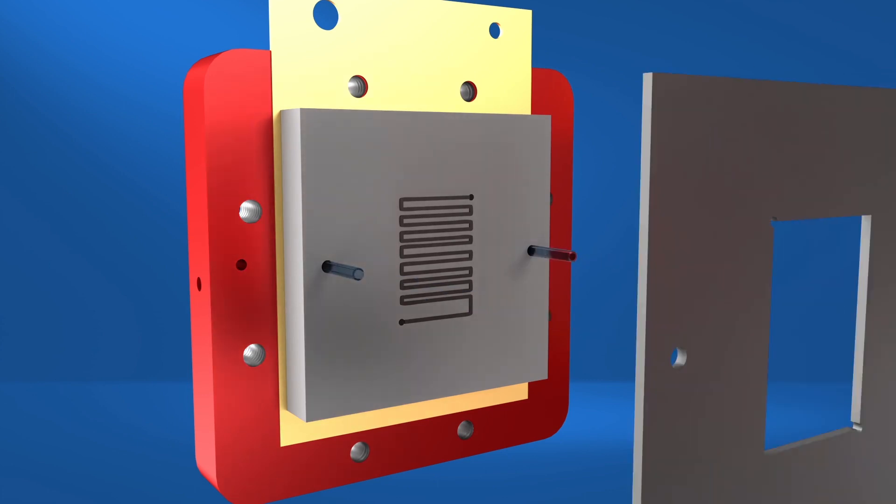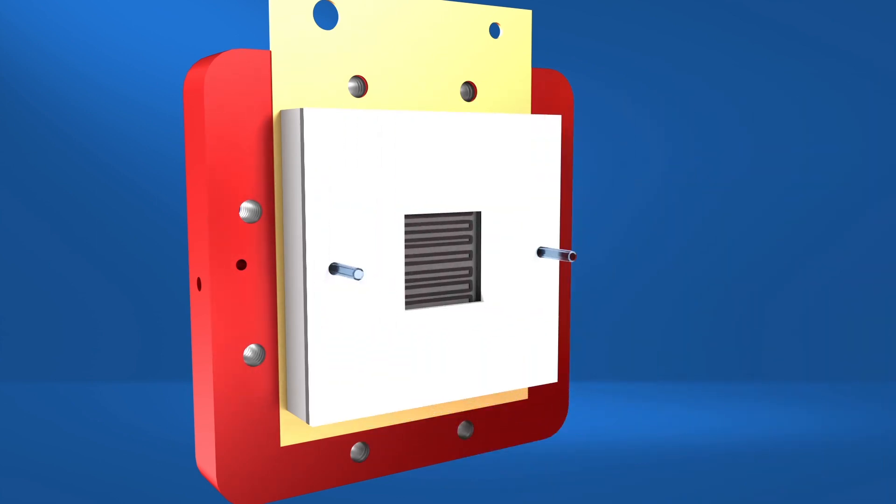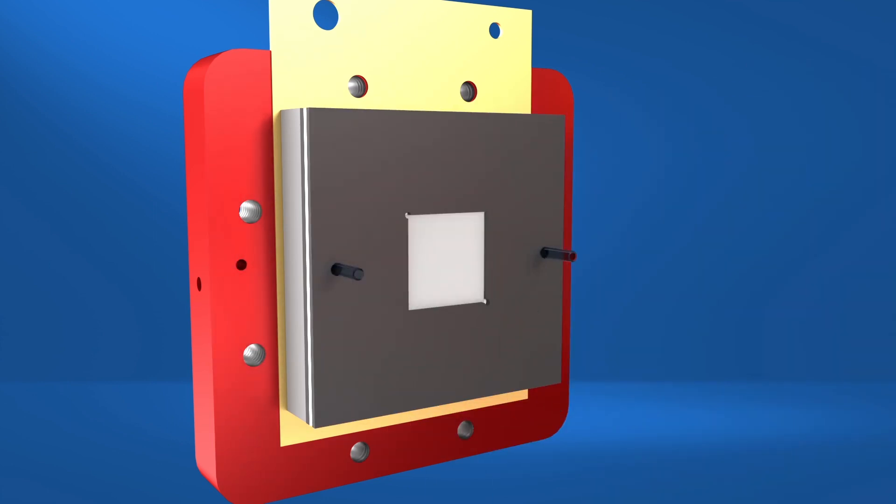Next, place the flow field gasket on the flow field. Install the negative flow frame on top of the flow field gasket, and then place the electrode in the flow frame window. Place the main gasket on the flow frame to complete the assembly of the negative half of the cell.